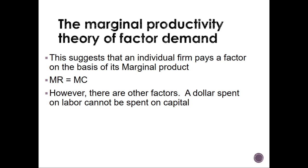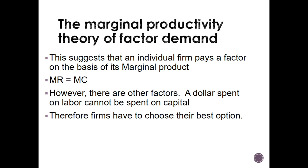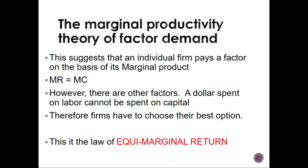There are also other factors to consider — a dollar spent on labor cannot be spent on capital. So if you pay a thousand to your workers, you cannot also spend that same amount on machines. Firms have to choose their best options, whether to use labor or capital. For example, you may need 10 employees to cultivate a field, but if you buy a tractor, you only need one person to drive it. This trade-off is what you call a co-marginal return.